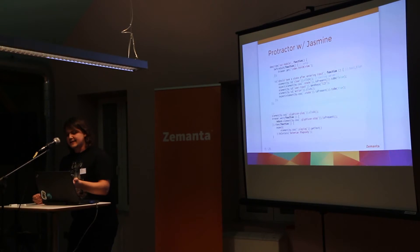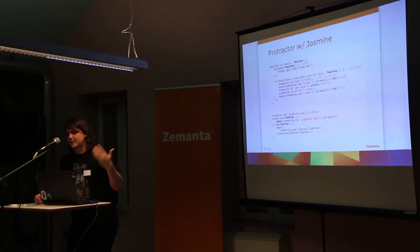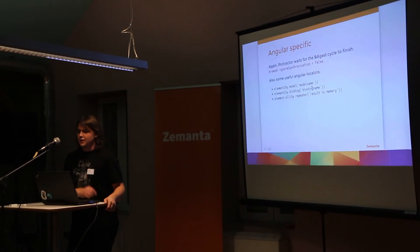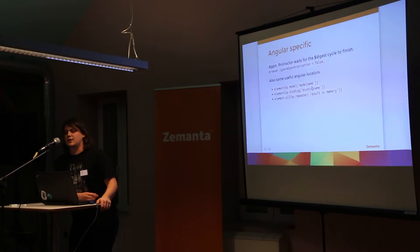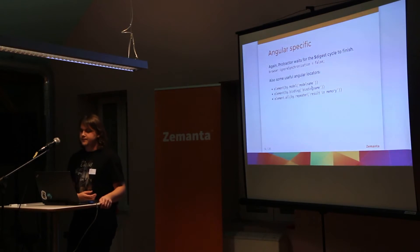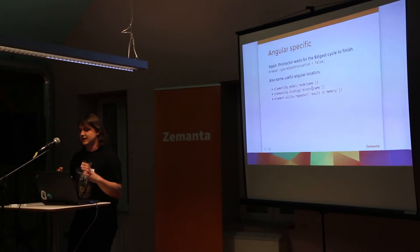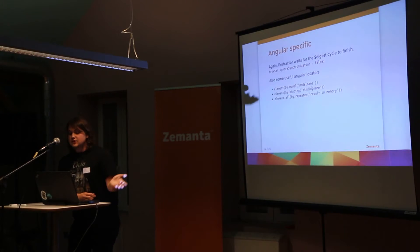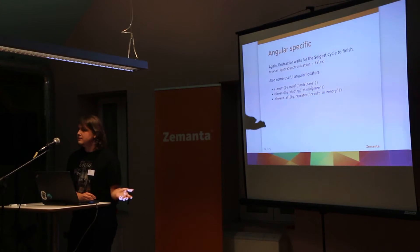Protractor waits for the digest cycle to finish. You can disable that by setting ignoreSynchronization to true. A use case is when you are authenticating your system and the authentication is done outside your Angular app, so you don't want the synchronization there. There are also some useful Angular locators like element by model, element by binding, element by repeater, and so on.